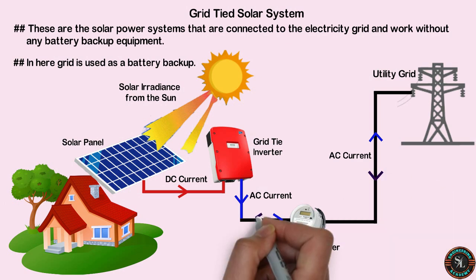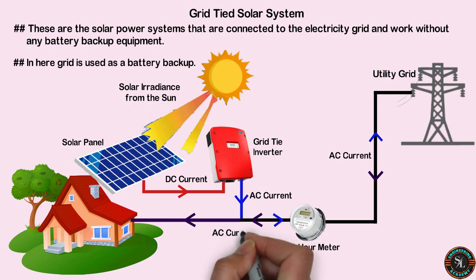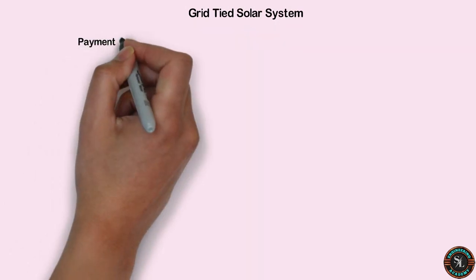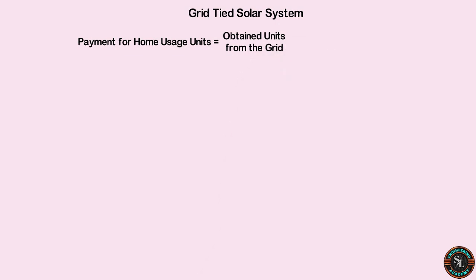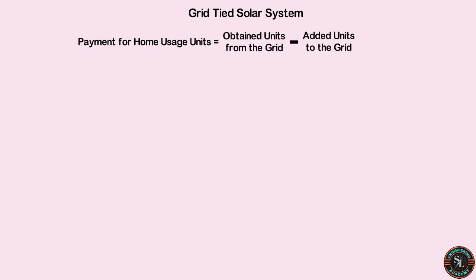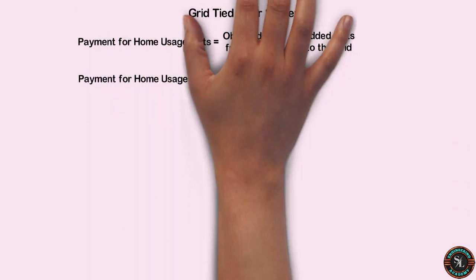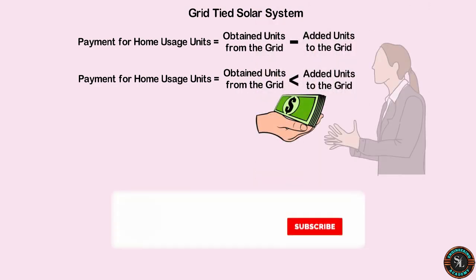The electricity required for the home is obtained from the grid. During daytime — when sunlight is available — electricity is generated and added to the grid, while the required electric power for house usage is obtained from the grid. Finally, we pay for the units which is the difference between units obtained from the grid and units added to the grid using solar power. So we can reduce the electricity bill. If the units added to the grid are higher than units obtained from the grid, we can receive money for the excess units.